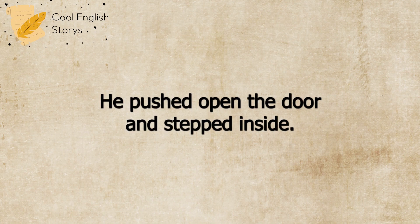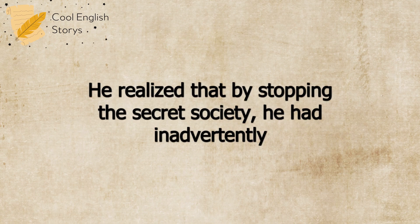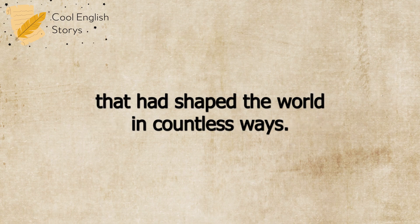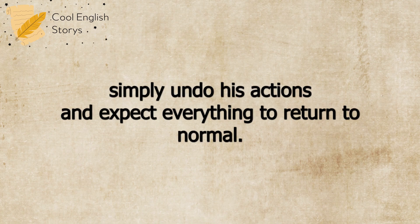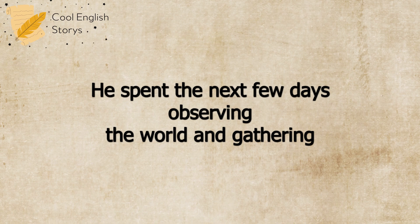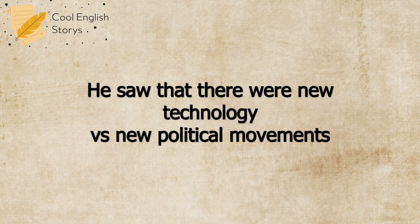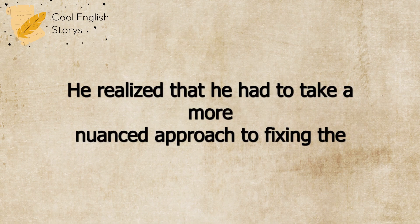He pushed open the door and stepped inside. The interior was unrecognizable. The walls were covered in sleek, modern designs, and there were no signs of the secret society's presence. He realized that by stopping the secret society, he had inadvertently altered the course of history in ways he couldn't have predicted. The society's actions had led to a string of events that had shaped the world in countless ways. He knew that he couldn't simply undo his actions and expect everything to return to normal. He had to carefully consider each step he took to avoid causing unintended consequences. He spent the next few days observing the world and gathering information. He saw that there were new technologies, new political movements, and new social norms that had emerged as a result of his actions.